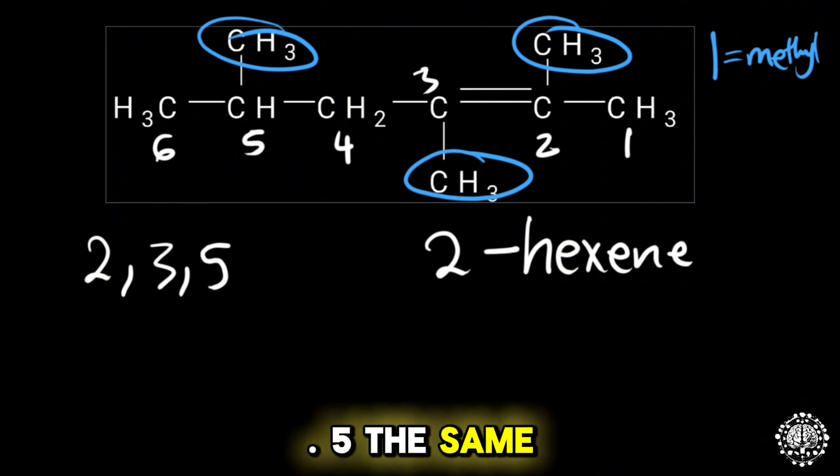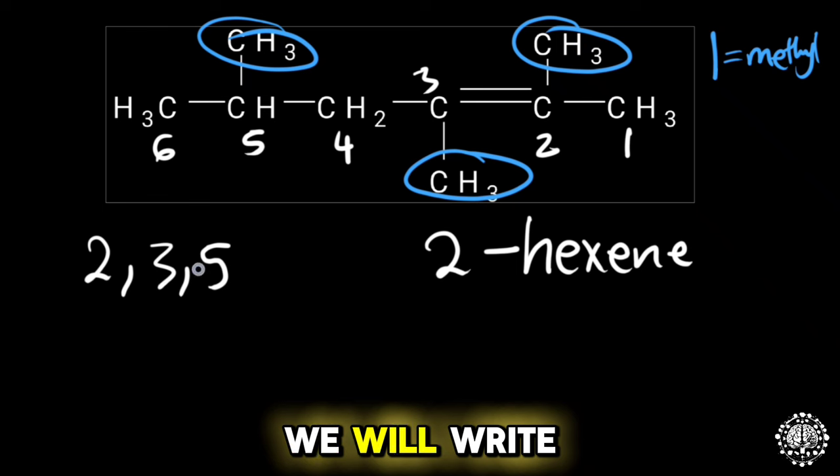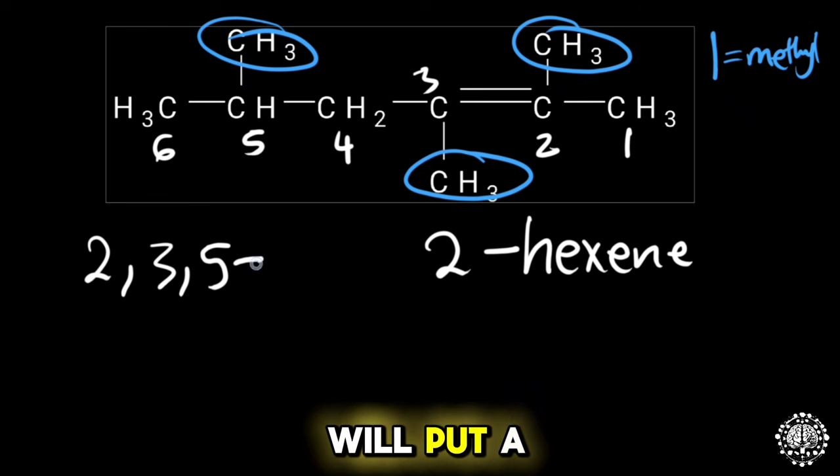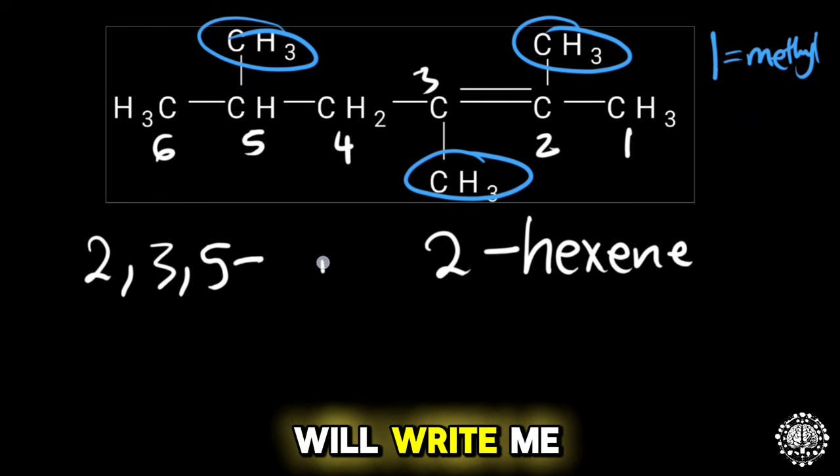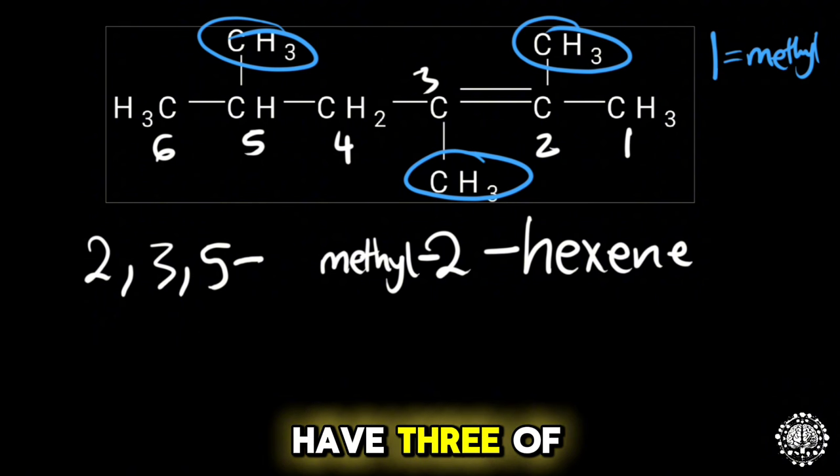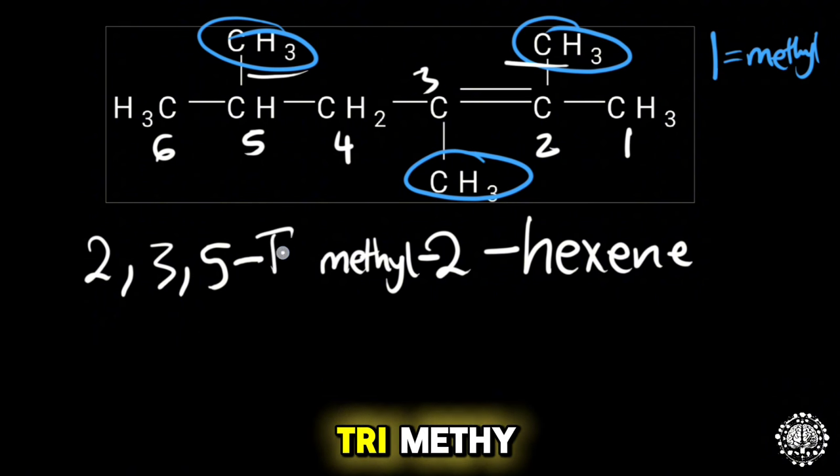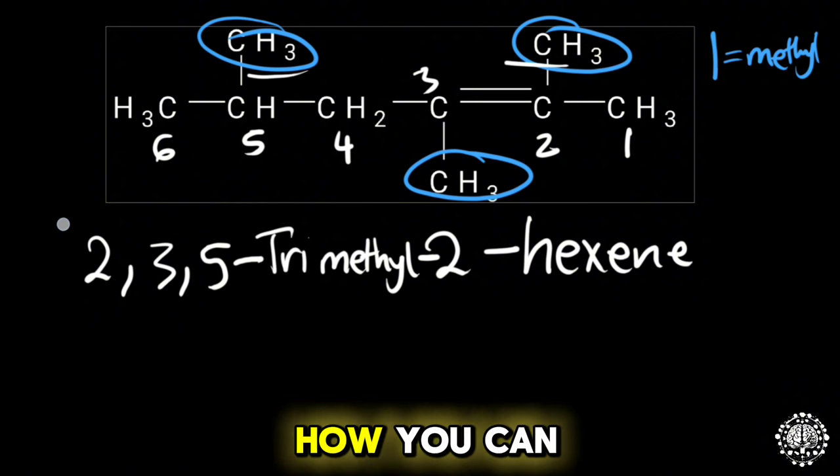We will write this like this and then we will put a hyphen, and then we will write methyl. But because we have three of these, we will write trimethyl, and that is how you can simply name the alkene.